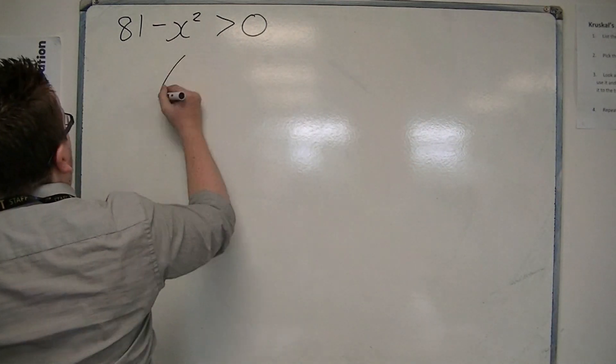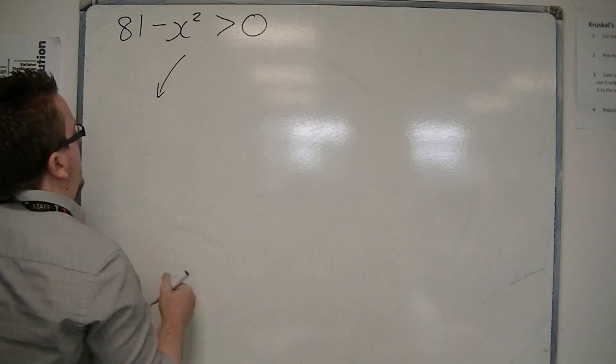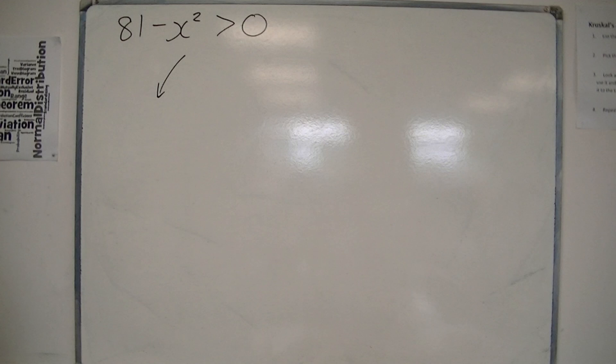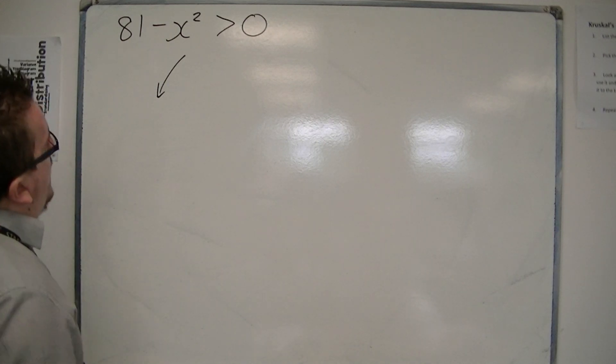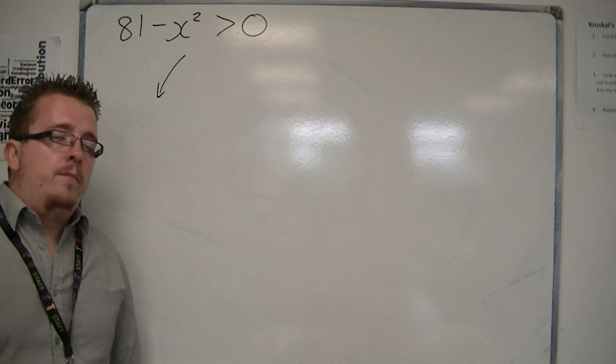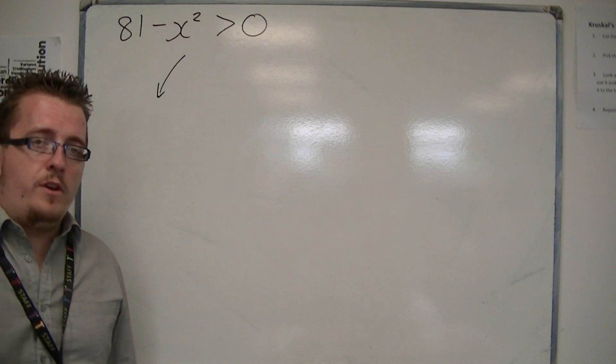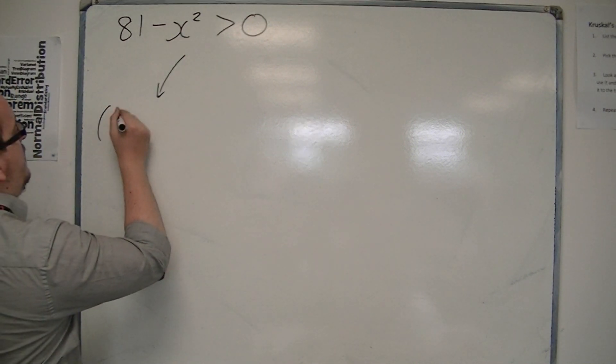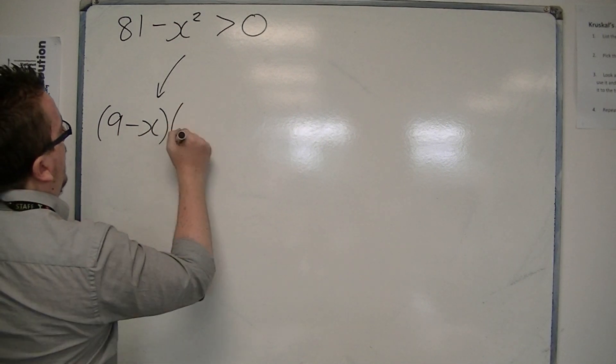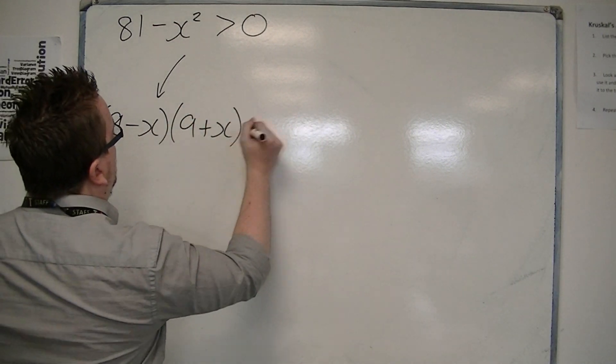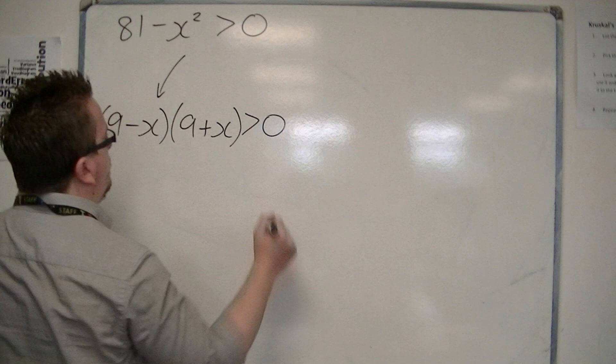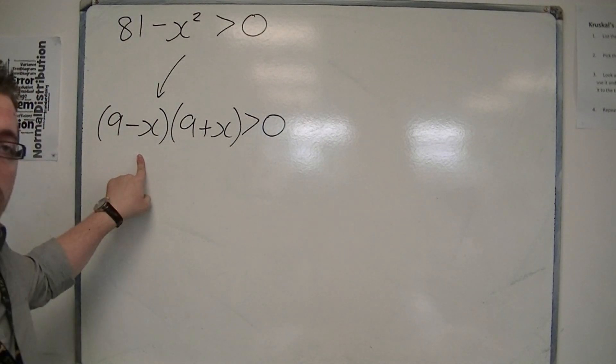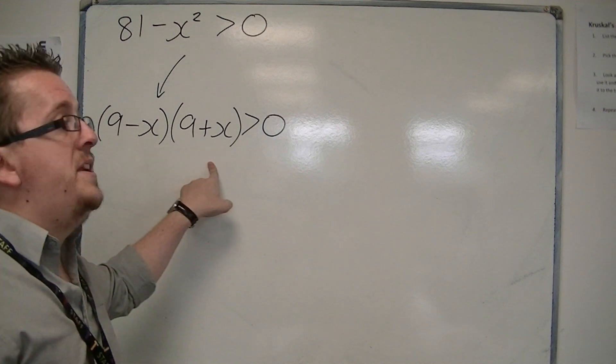So the first way is to maintain the negative in front of the x squared. And then, I've chosen one here that easily factorises using the difference of two squares. So we're going to have 9 minus x and 9 plus x is greater than 0. So the two solutions for this equation would be minus 9 and 9.